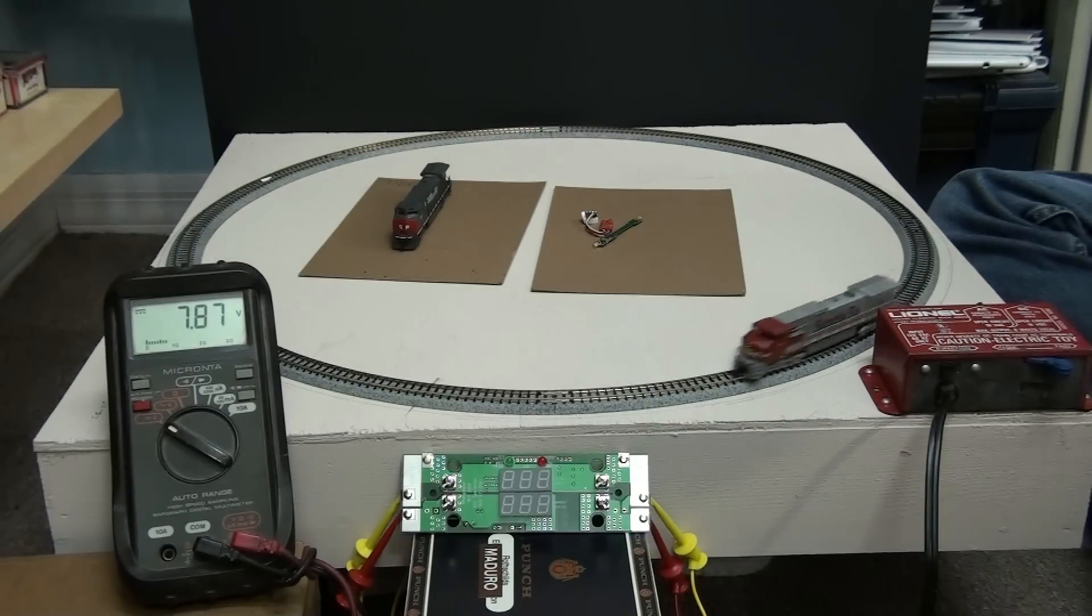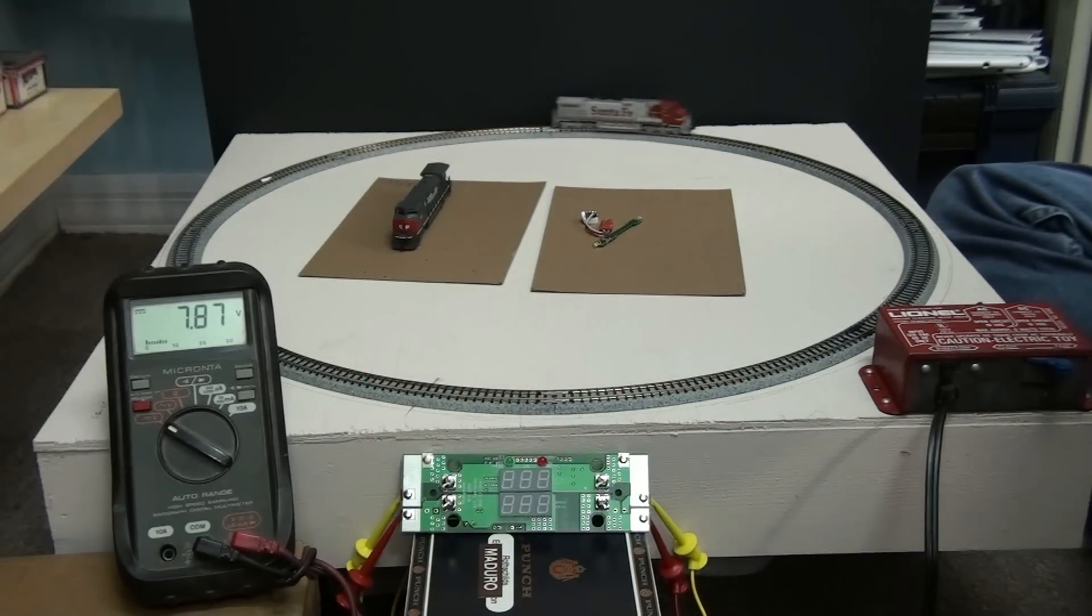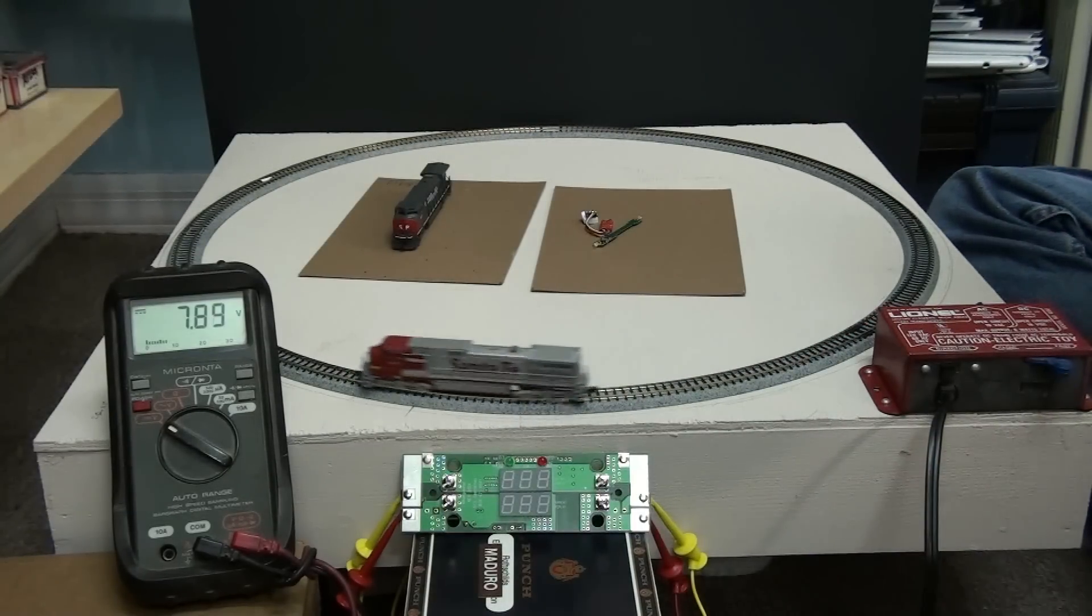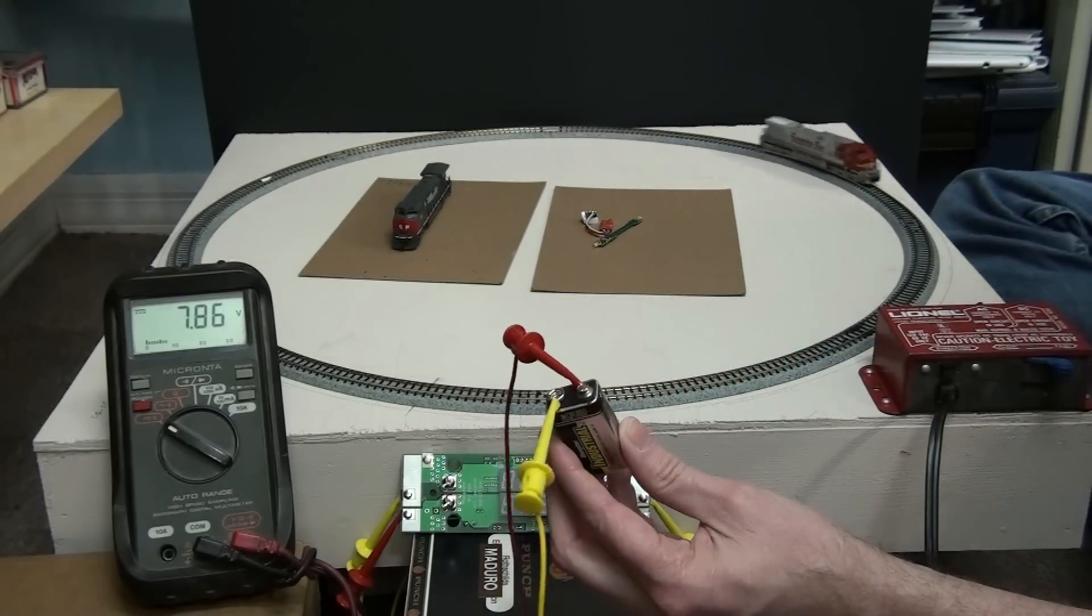For an example right now, within scale, you can see on my track voltage here we're running at 7.8, give or take. Actually that train right now, we're running on a 9 volt battery. No big deal.